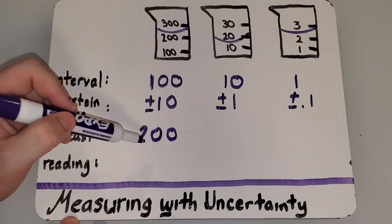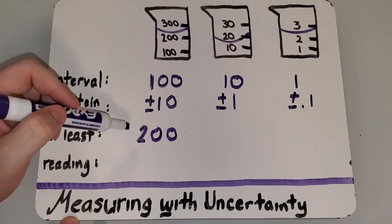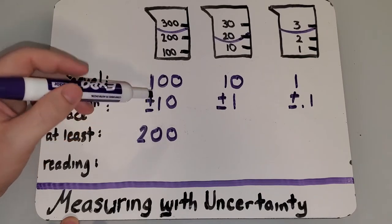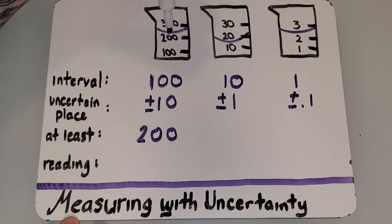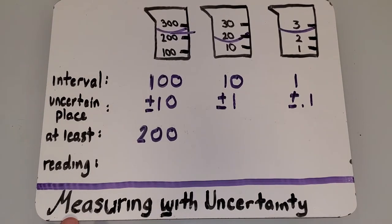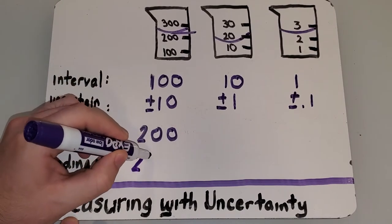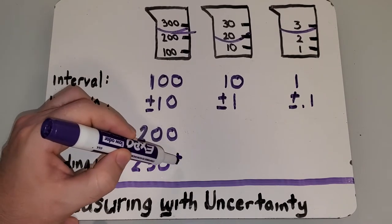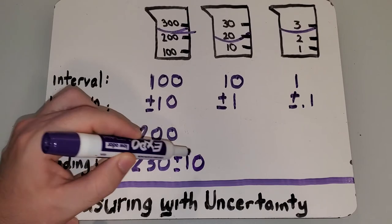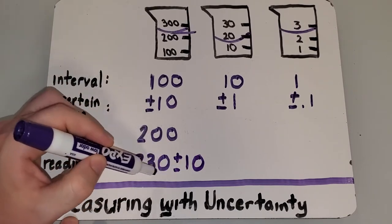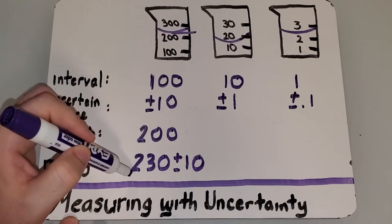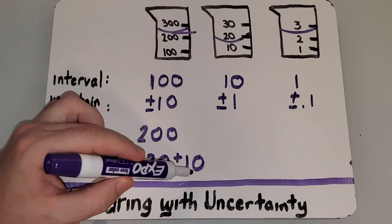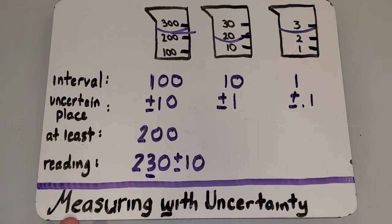Now, we're sure of that 200, and we're going to start estimating in the tens place. So, to me, let's kind of draw a line across here. This looks like it's maybe a little bit less than halfway to the 300. So, I'm going to say 230. And then this plus or minus tells us which place in this 230 was an estimate. This is tens, so the tens place was an estimate.